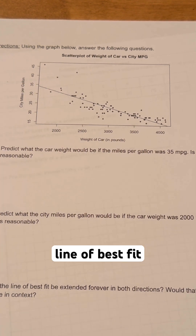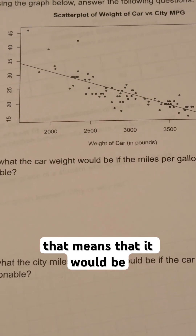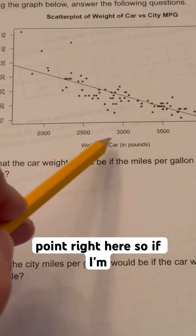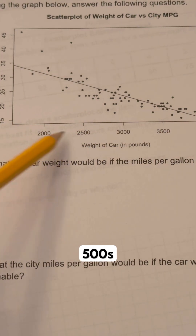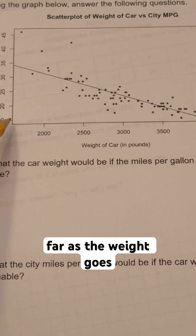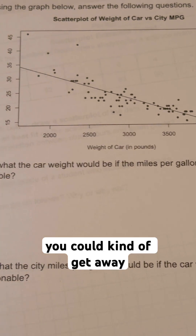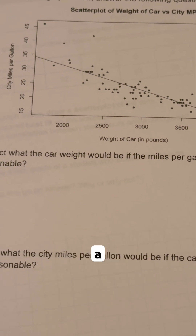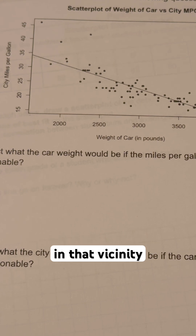Now if you see the line, the line of best fit is just below it, so that means it would be a little bit before this point right here. 2,000 is the lowest point here and this is spaced out by five hundredths. So that would probably mean that's about 1,500 as far as the weight goes — maybe a little bit less, maybe 1,440 or 1,450, somewhere in that vicinity. That would be an okay answer for this.